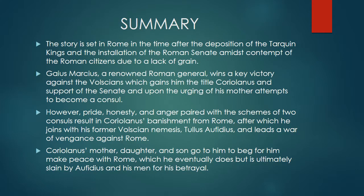Coriolanus takes place in Rome after the deposition of the Tarquin kings, and is centered around the life and death of the Roman general Caius Martius Coriolanus. The play begins with a riot of the plebeians — the lower-class citizens of Rome — regarding the Senate not providing enough grain to live on. This riot is met by the general Caius Martius, who is outraged that the common people are not grateful for what the Senate does for them, showing he is concerned with the well-being of Rome and the upper class, not the people. This leads the tribunes Brutus and Sicinius, who represent the plebeians, to denounce him.